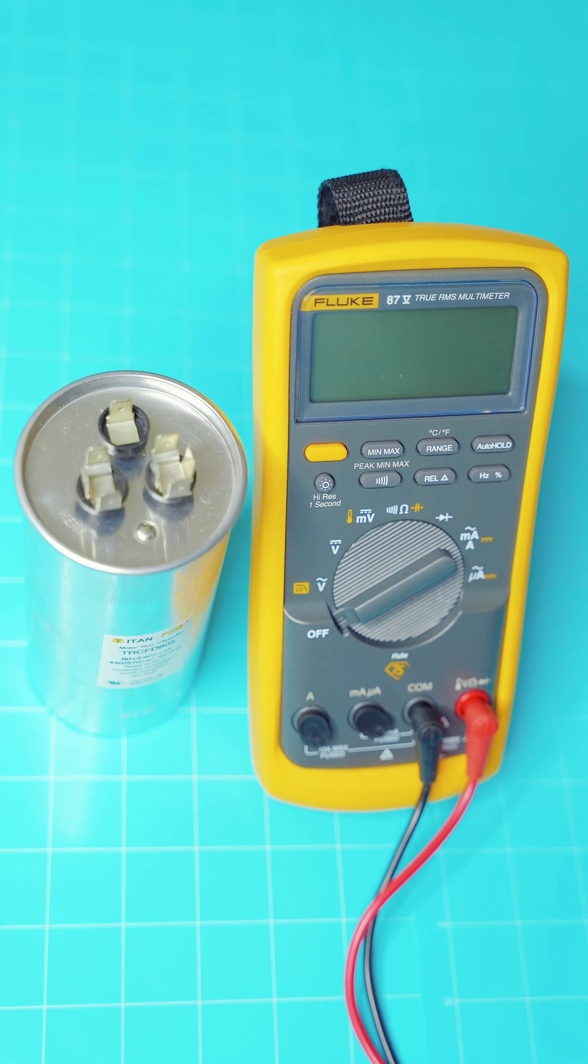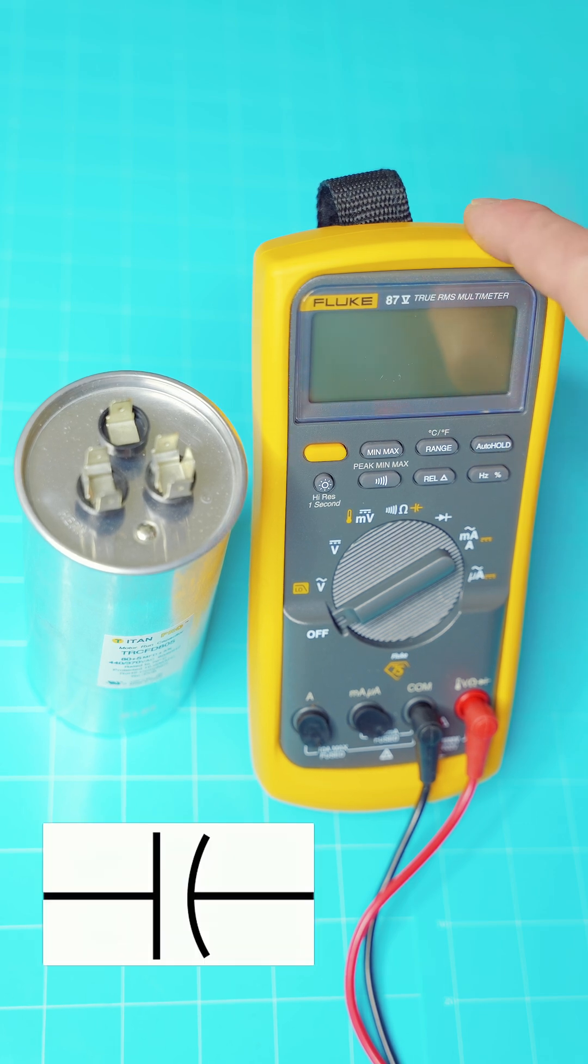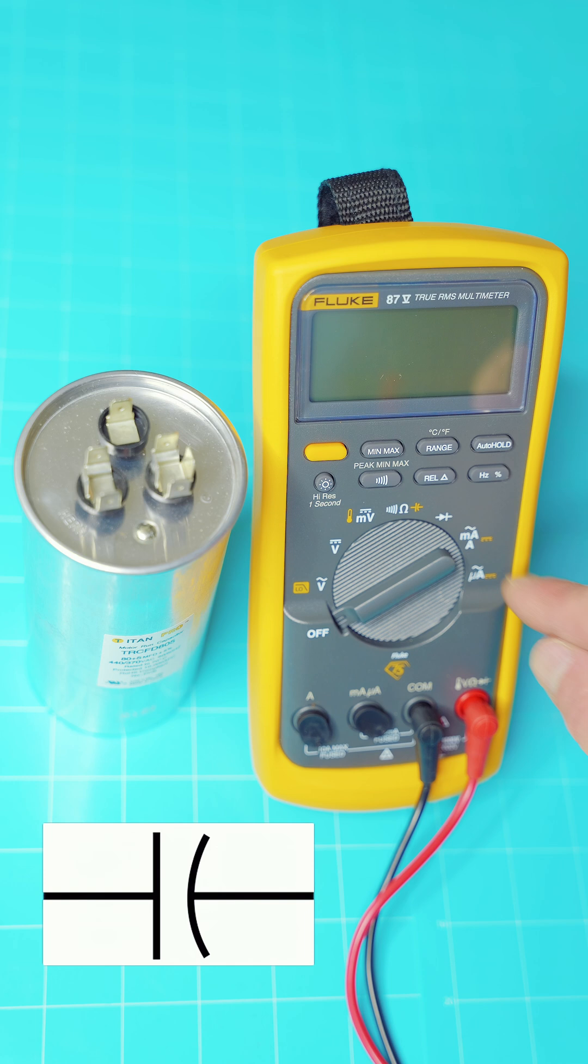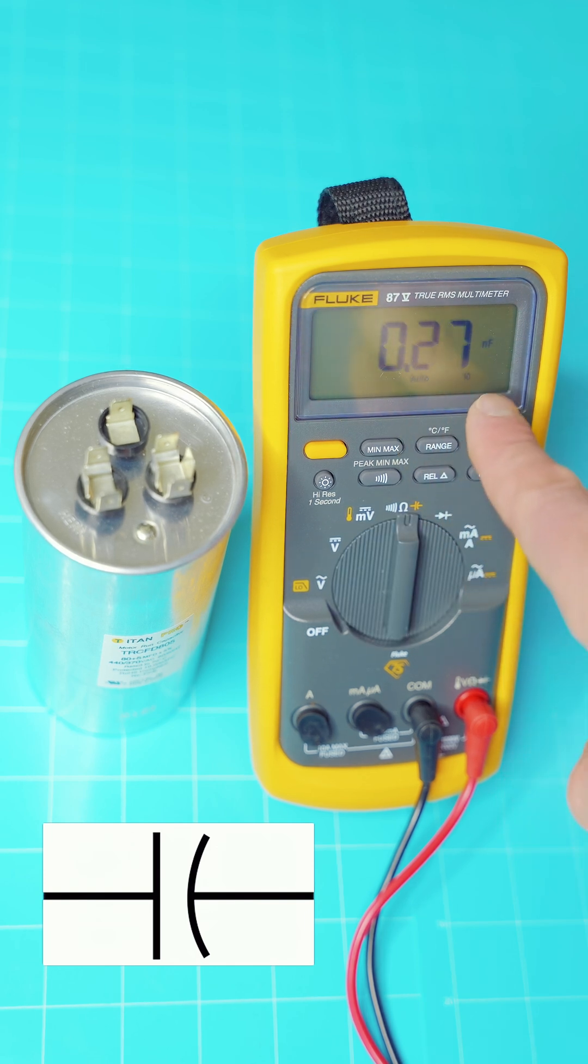Now that you've discharged your capacitor, it's super easy. You're just going to need a meter that's capable of measuring capacitance. Today I've got my Fluke 87. We're going to need to find our capacitance mode. I'm in capacitance ready to measure microfarads.